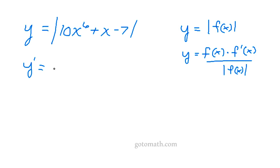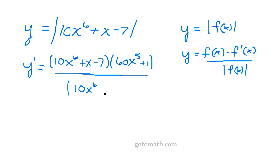So we have y prime is equal to, we're going to have, and I'm going to go ahead and start parentheses here: 10x to the 6 plus x minus 7. And then the derivative of the inside is going to be 60x to the 5th plus 1. And of course it's all over, we just rewrite the whole thing here: 10x to the 6th plus x minus 7 in the absolute value. There you go.